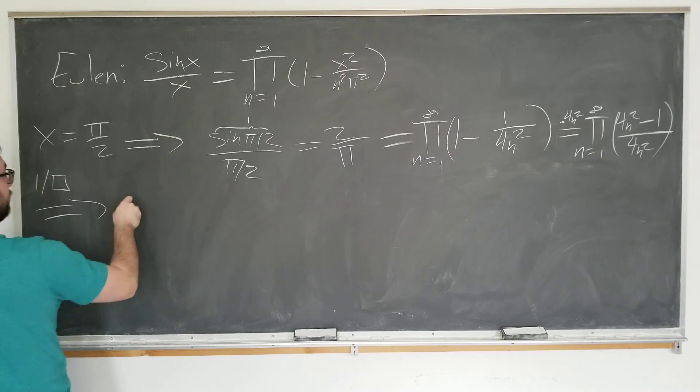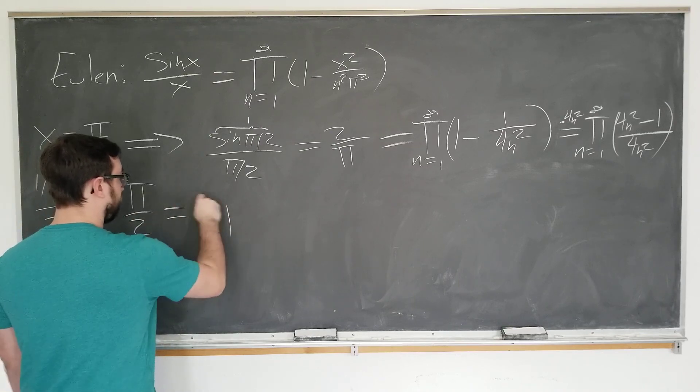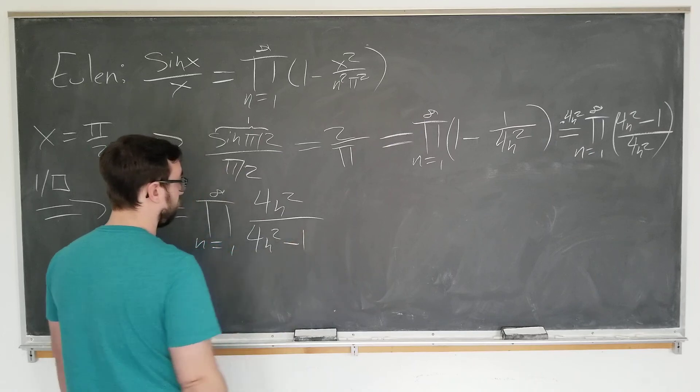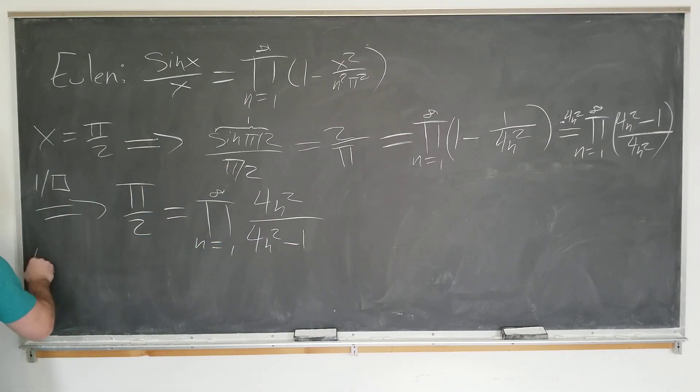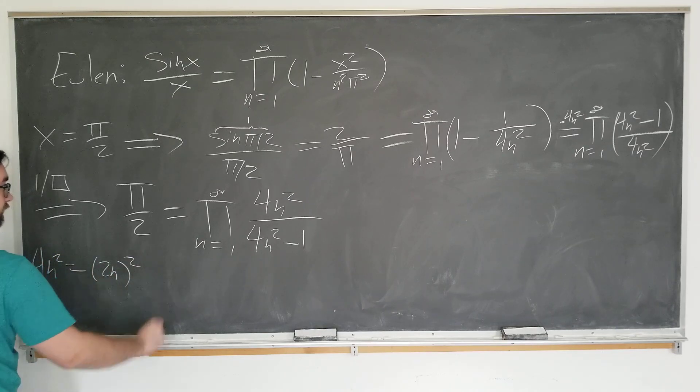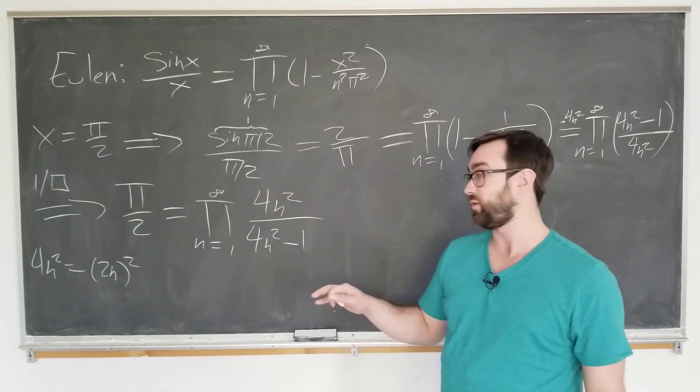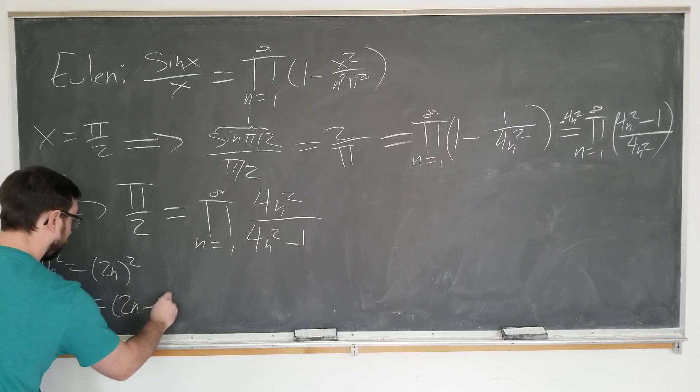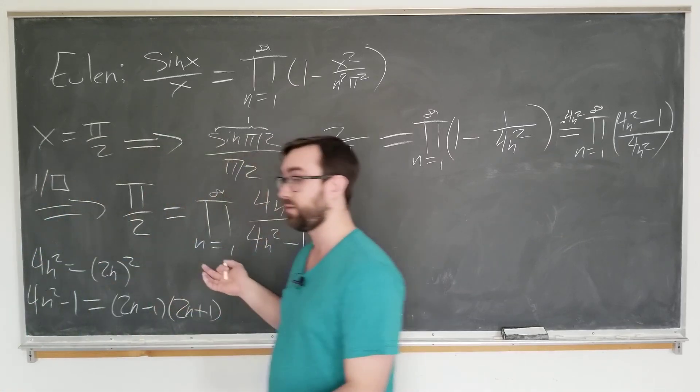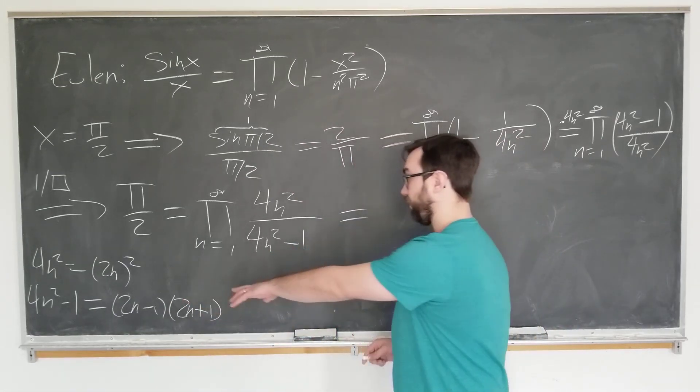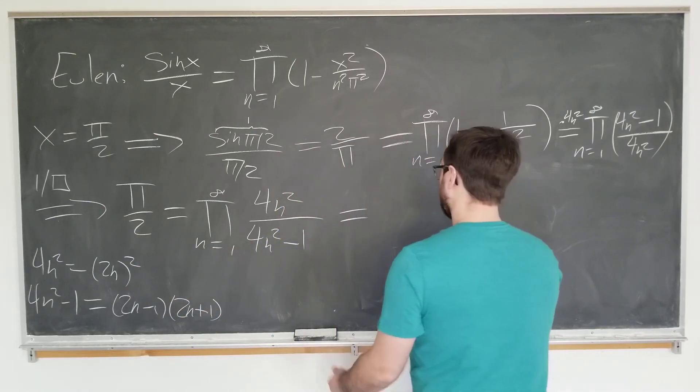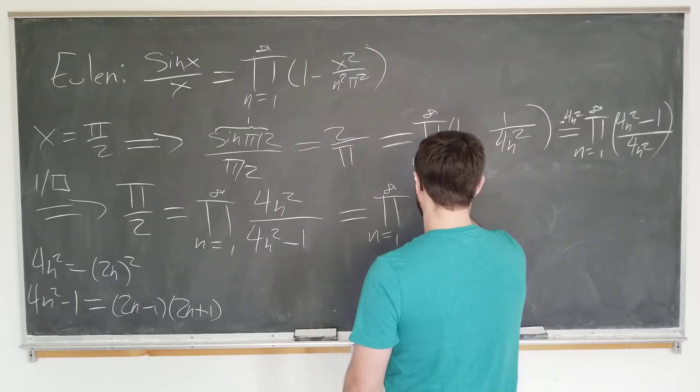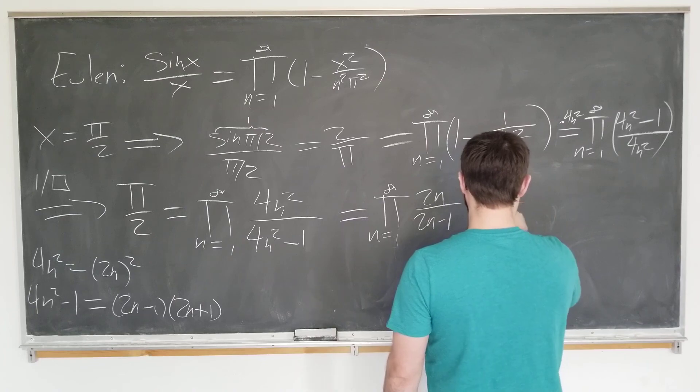We take 1 over everything here. We get pi over 2 is equal to the infinite product that goes from 1 to infinity of 4n squared over 4n squared minus 1. And now, we're going to note here that 4n squared is really just 2n squared. So, we can write this on the top as two factors of 2n. And on the bottom, we can note that 4n squared minus 1 is actually equal to 2n minus 1 times 2n plus 1. Because that's how we use the difference of squares formula. And you see where we're going here. We already have the odd numbers here. And we already have the even numbers here. So, it's just the product as n goes from 1 to infinity. And now, we're pretty much done. We have 2n over 2n minus 1 times 2n over 2n plus 1.